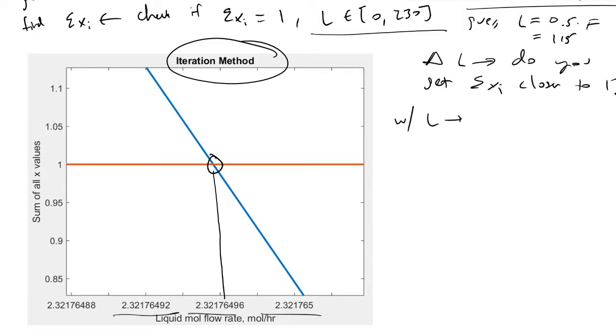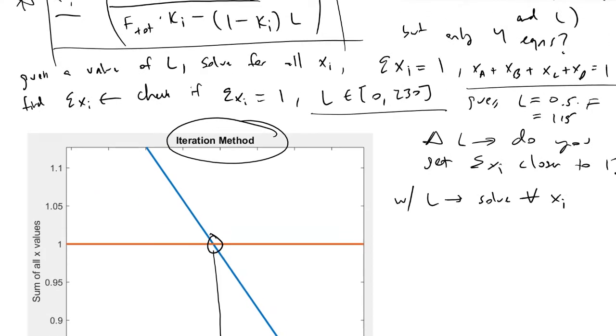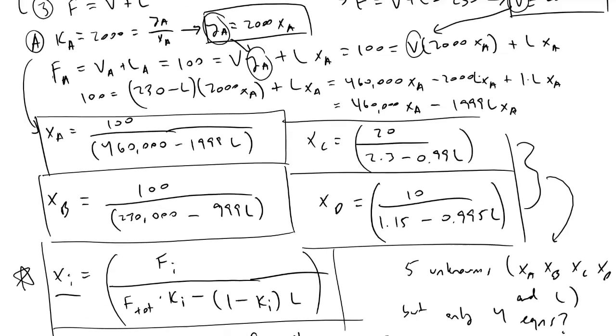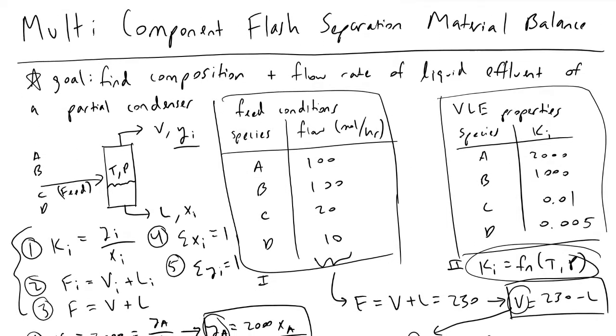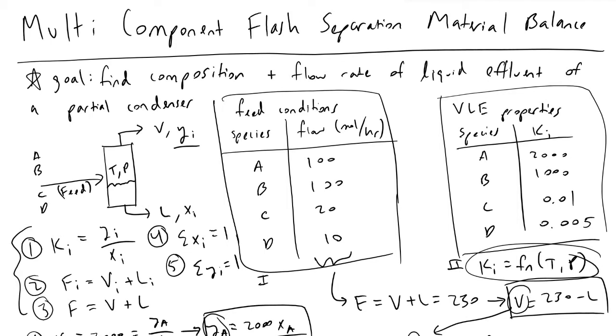Once you know L, you can solve for all x_i's because we conveniently solved for x_i's as functions of L. That gives you your molar composition as well as the total molar flow of your liquid stream using a material balance on a flash separation unit with four species we were interested in separating to some extent.